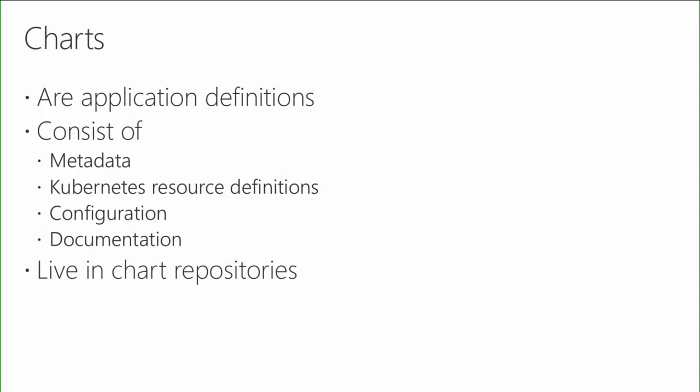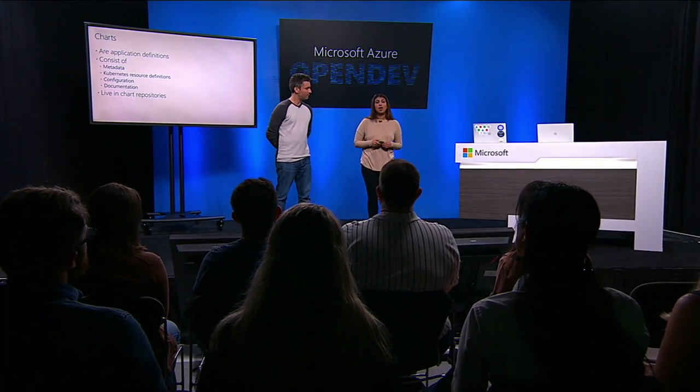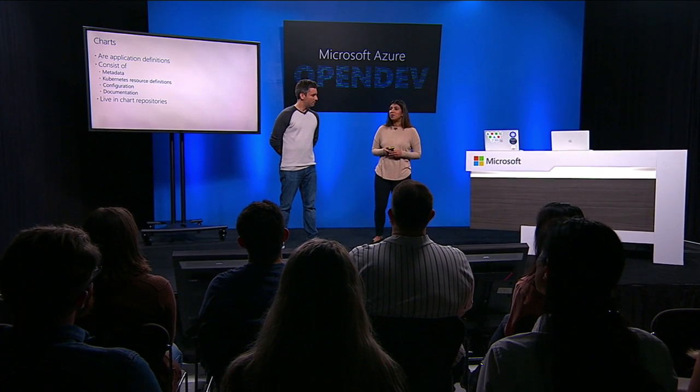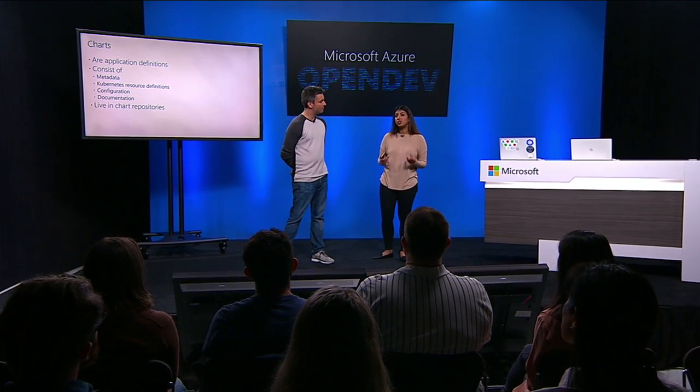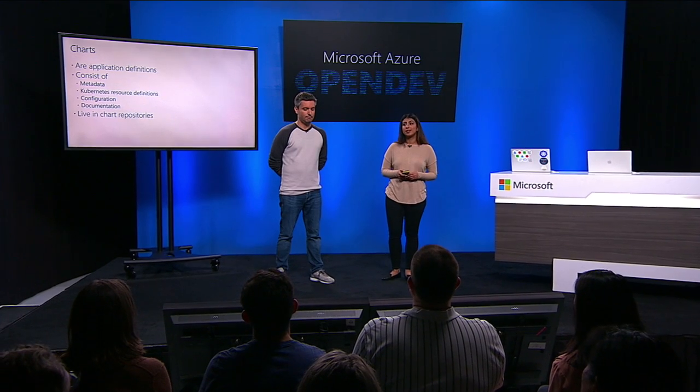So we built a tool called Helm. In Helm, a package is called a chart — it's an application definition. It consists of some metadata, the Kubernetes resource definitions needed for your chart (which is the bulk of the actual chart), and those resource definitions can be templated or non-templated. If they are templated, the configuration lives inside the chart as well. The last piece is documentation, which helps people consuming your chart understand what to do with it. Charts live in chart repositories, which are basic HTTP web servers with an index.yaml file in the root that provides metadata about how to find your actual chart.